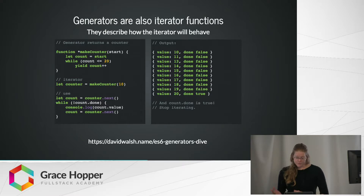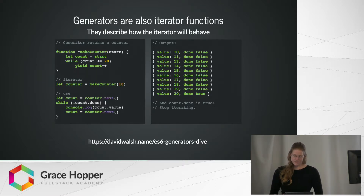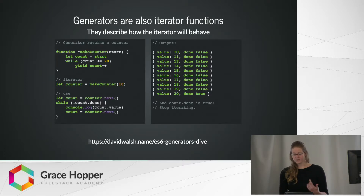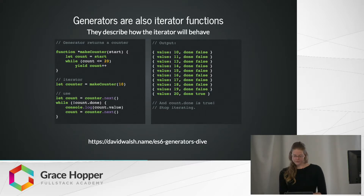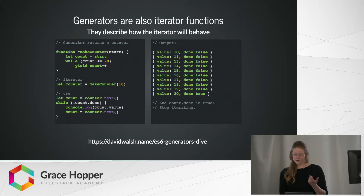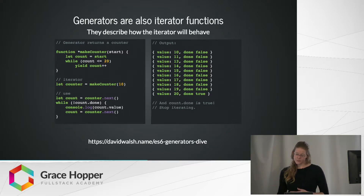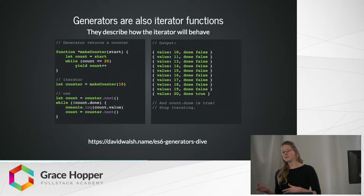Moving on, we can invoke makeCounter to make a counter, and then we can use a while loop to look at the values. We can just call dot next until the iterator is done. This code, as you can see on the right, will output 10 through 12. Please notice that the counter iterator uses the iterator protocol in its output. Also notice that the generator function determines when the counter is used up — that is to say, when count.done is true.